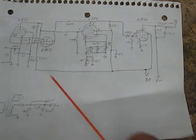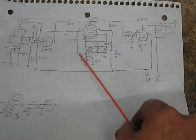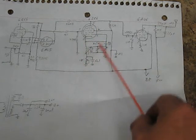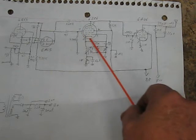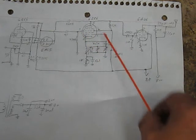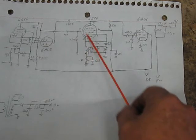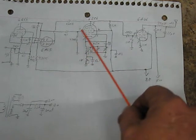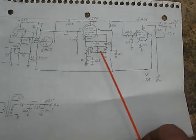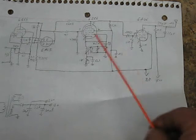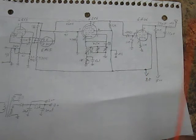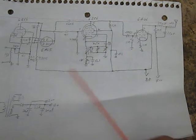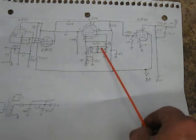So basically what we've got is we're using a 6BE6 in this particular case, which is just a pentagrid converter tube, standard. You see a lot of these in, like, all American, well, not so much all American 5 radios, but the newer radios. All American 5 would probably be a 12BE6, and you could do that.